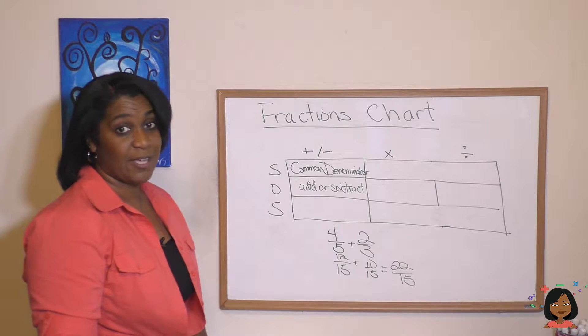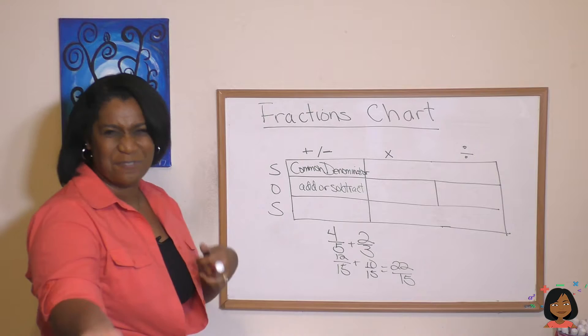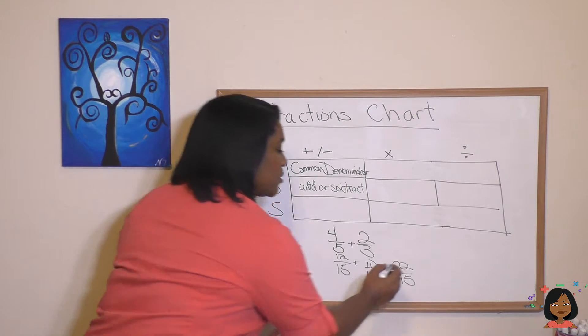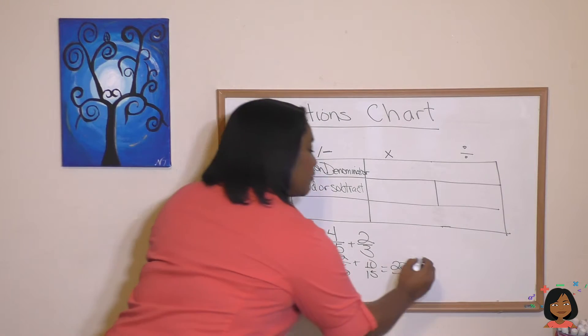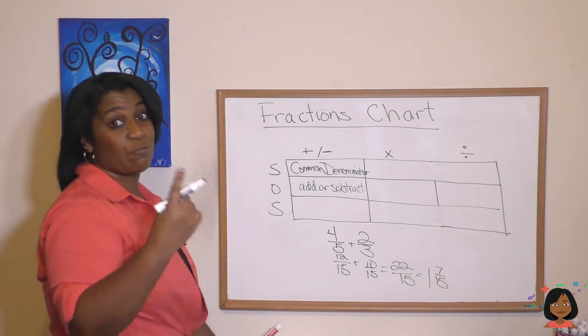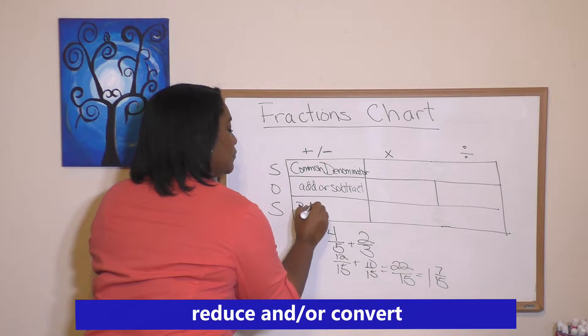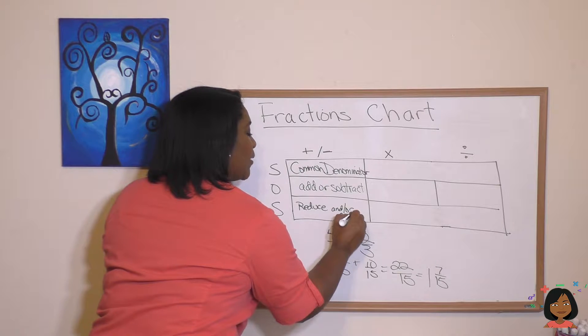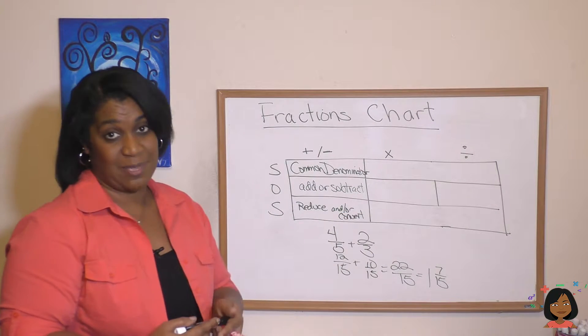Okay, now what about the last part, which is simplify? I either have to reduce my fraction or I also have to convert it from an improper fraction to a mixed number. So here I would do, well, 15 goes into 22 once and there'll be 7 left over: 1 and 7/15. So we're either going to reduce and/or convert. That's what the adding and subtracting piece looks like.